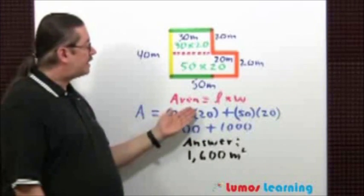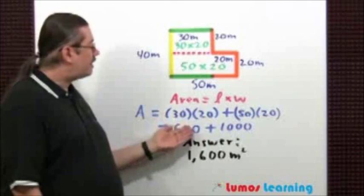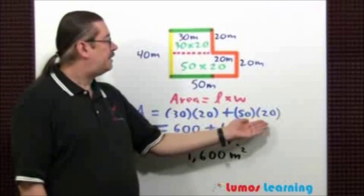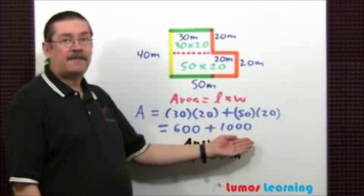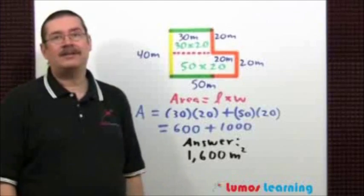The area form of a rectangle is length times width. So the area is going to be 30 times 20 for the first rectangle, plus 50 times 20 for the other rectangle. That gives us 600 plus 1,000, add those up, you get the answer of 1,600 square meters.